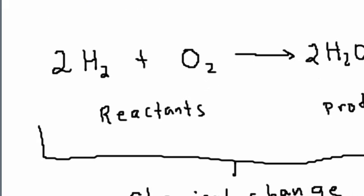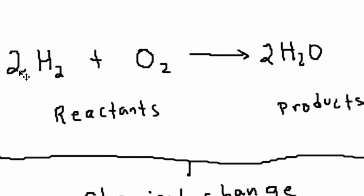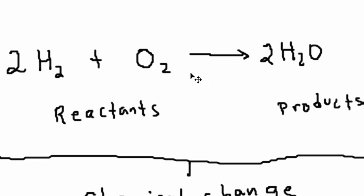Here's another example of a chemical change. We have two molecules of hydrogen reacting with two molecules of oxygen to form water. Water is a liquid at room temperature, while hydrogen and oxygen are both gases at room temperature. So when we combine these two gases we get a liquid compound — this is a chemical change because the product is not the same as what you started out with.